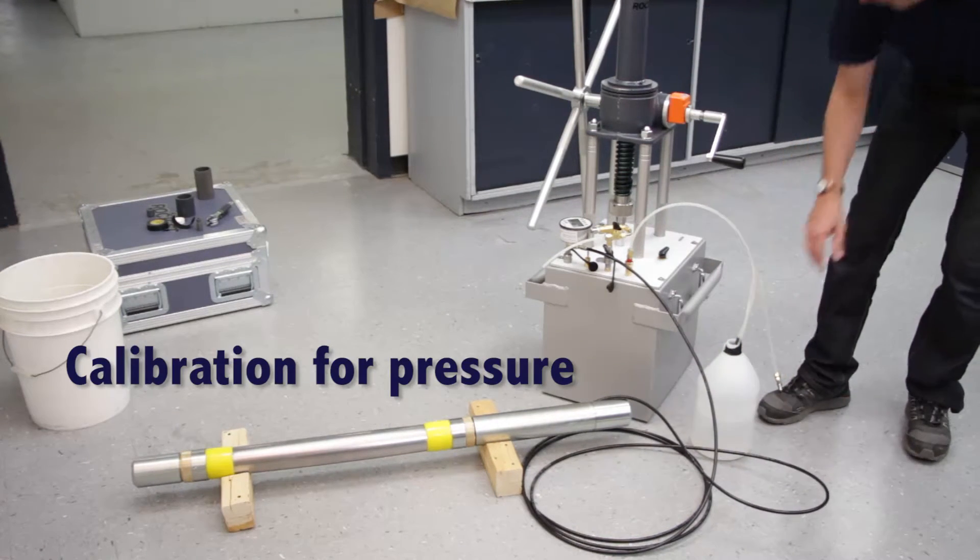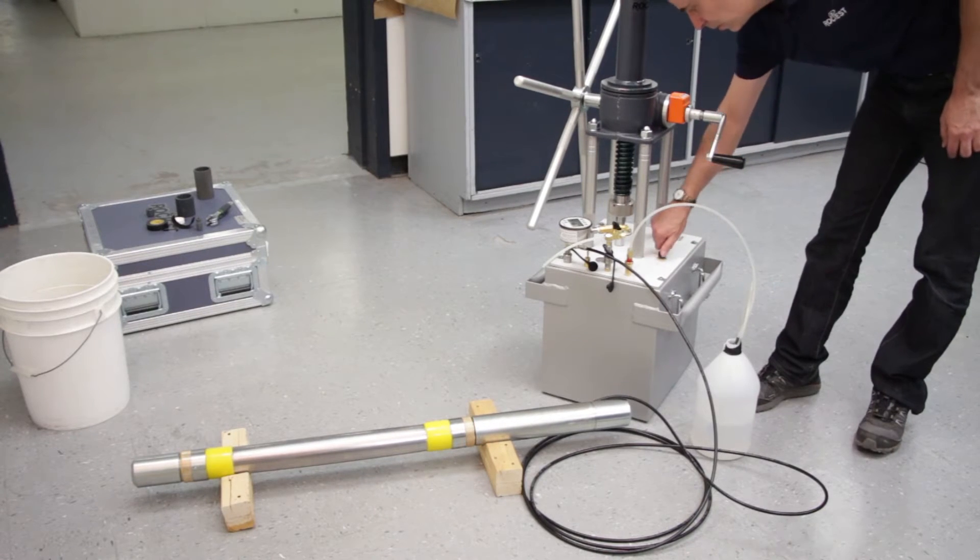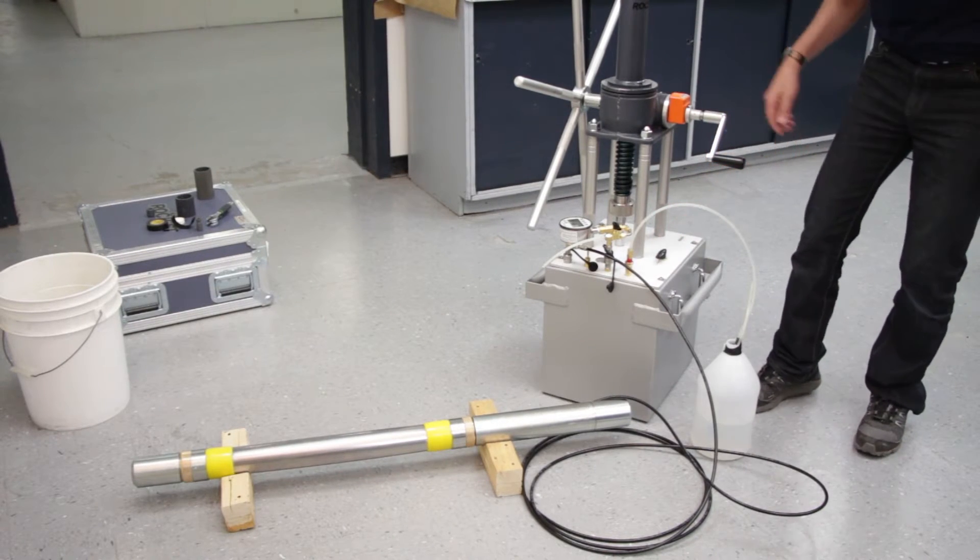Step number 2. Connect the Tecalan tubing to port number 1 and place the valve number 5 to test.